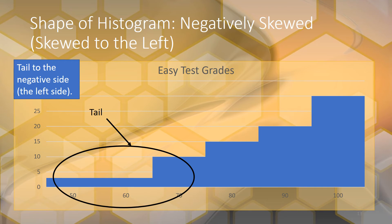Here's a negatively skewed histogram, also called skewed to the left. The tail is on the left-hand side, where the lower numbers are, so it's called negatively skewed. This histogram is skewed to the left because the test was really easy, so most people made high grades, with just a few people making lower grades.